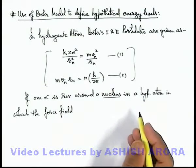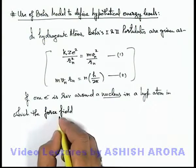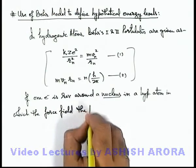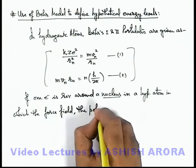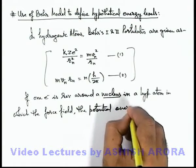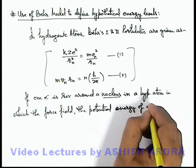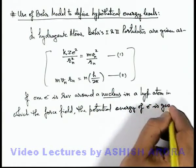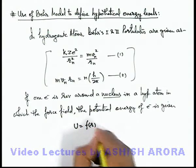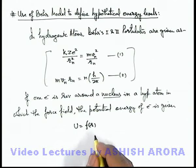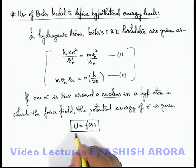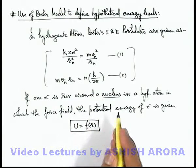But in a hypothetical atom, say it is given that the force field, the potential energy of electron is given as U = f(r). Here potential energy is given as a function of separation between the electron and the nucleus. If this expression is given to us instead of a direct electrostatic energy...